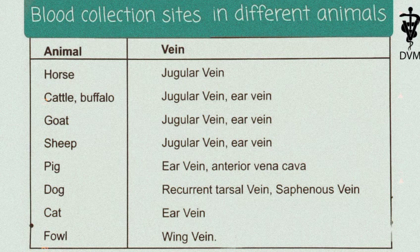Let's discuss the exact sites of blood collection of animals using the table shown. The names of veins are written in front of animal names. For horse, blood is collected from the jugular vein. For buffalo and cattle, blood is collected from the jugular and femoral veins, and similarly for sheep and goat. For pig, blood is collected from the ear vein and anterior vena cava.